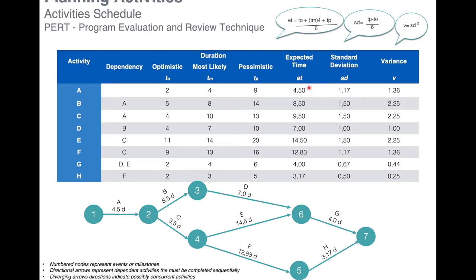Then we establish the expected duration for the activity. We calculate it as: optimistic duration (2) plus the most likely duration (4) multiplied by four (16), plus the pessimistic duration (9). That gives us 2 + 16 + 9 = 27, and then we divide by six.